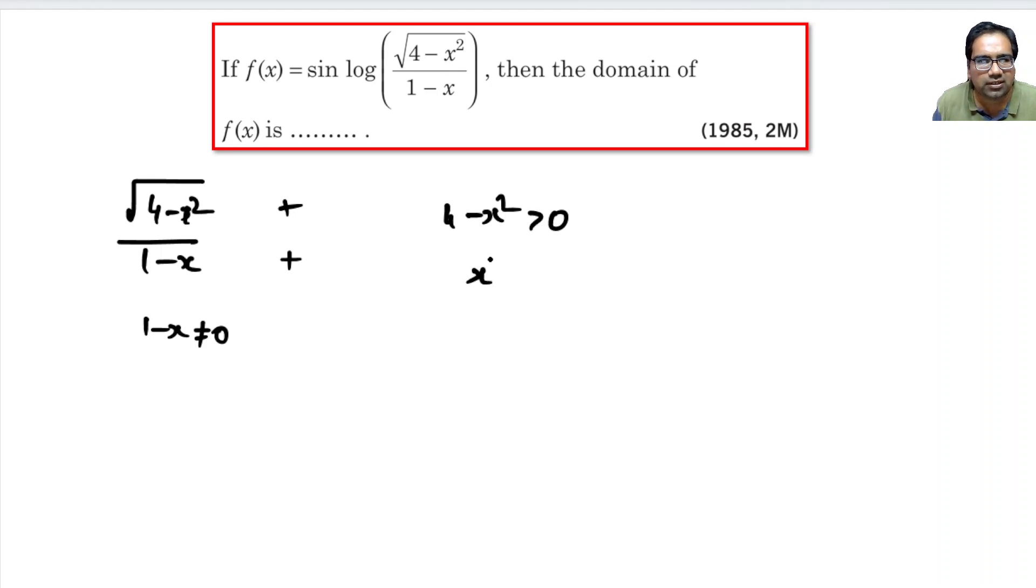What does that mean? x² should be less than 4. What does that mean? -2 < x < 2. This is one part of the story. Here, 1-x should not be equal to 0, so that means x should not be equal to 1.